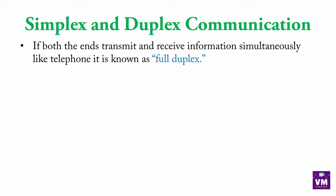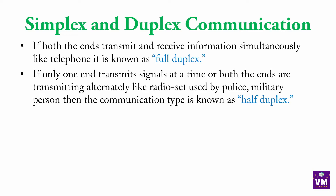If both the ends transmit and receive information simultaneously like telephone, it is known as full duplex. Duplex mein bhi do types hote hai. Jab simultaneously information give and take hota hai — yani ki telephone pe hum ek saath dono side se bhi baat kar sakte hai — usse bolte hai full duplex communication. If only one end transmits signal at a time, or both ends are transmitting alternately like a radio set used by police, military, then the communication type is known as half duplex.